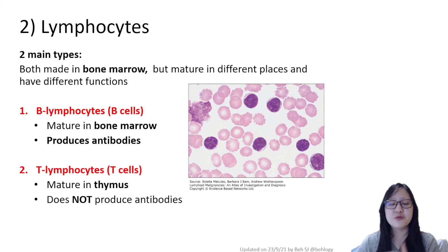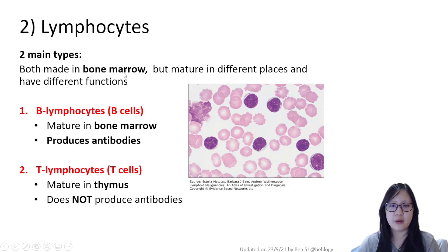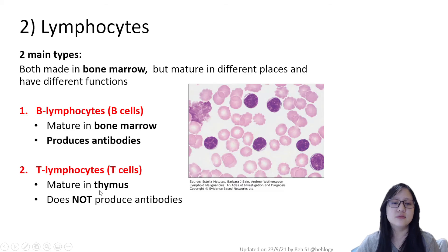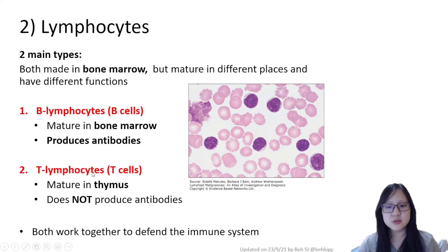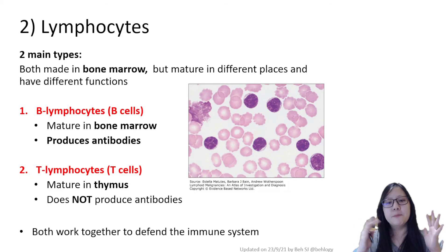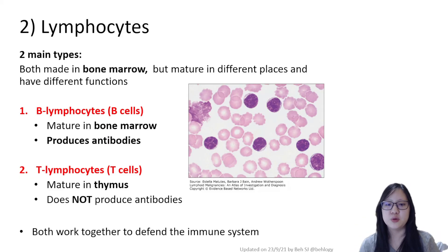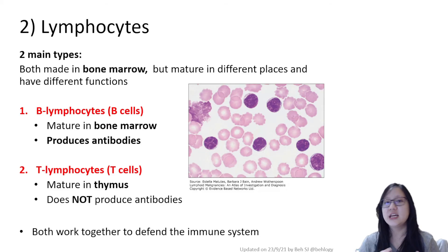T lymphocytes, also called T cells, are also made in the bone marrow but mature in the thymus — hence T cells. They do not produce antibodies but produce something else you don't need to know yet. Both B and T cells are required to work together to defend the immune system. You'll learn more about them in chapter 11.